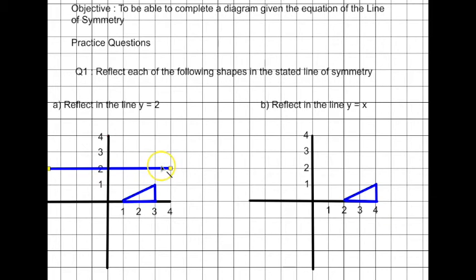Now all we've got to do is reflect this triangle in this line. The best way of doing that is just to count on the grid how many gaps there are between one of the coordinates of the shape and the line that you're reflecting it in.